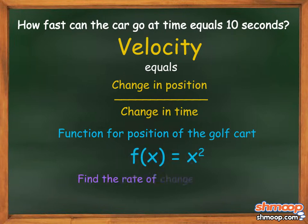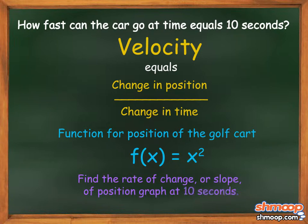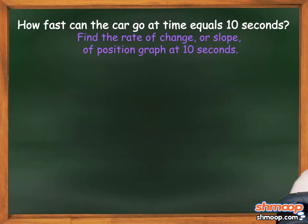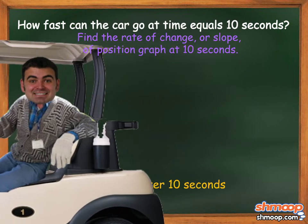If we can find the rate of change or slope of the position graph at 10 seconds, we will find how fast he is going. That is, after 10 seconds.